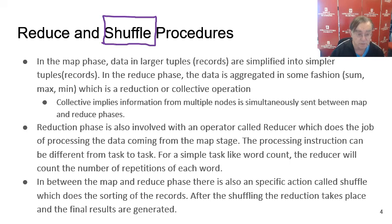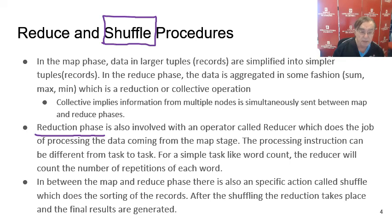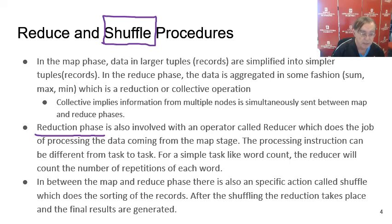If discovering the Higgs boson, the mapping phase looks at all the data taken at the particle accelerator, identifies events that could have been produced by Higgs bosons, and categorizes the properties of those events as histogram entries. Then the reduction phase takes all those histogram entries and adds them up to get a histogram where we will see a nice bump where the Higgs boson is.